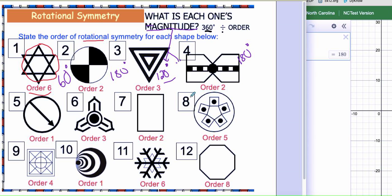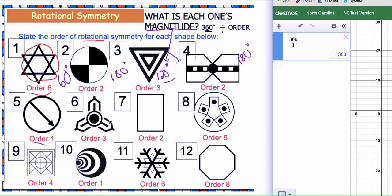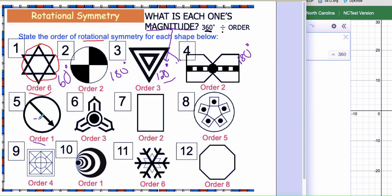So let's look at one that has an odd number. Order of one - what is the magnitude if I have an order of one? Well, what's 360 degrees divided by one? Yep, you got it - 360 degrees.